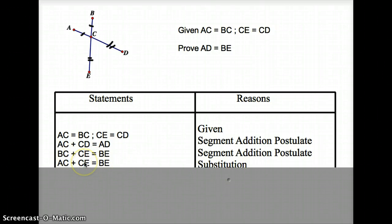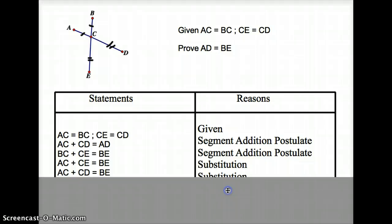Also, what does CE equal? CE equals CD, so I could substitute CD for CE. If I do that, I now have BE equal to AC plus CD. But I also have AD equal to AC plus CD.